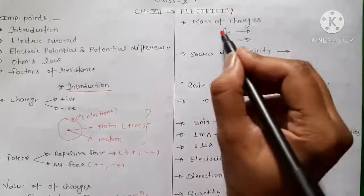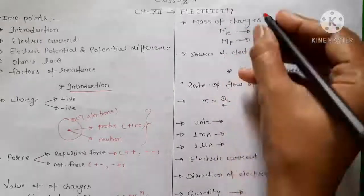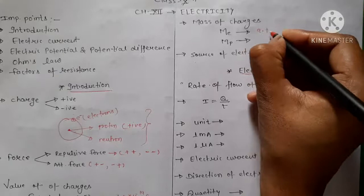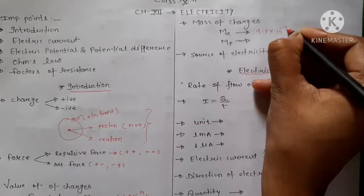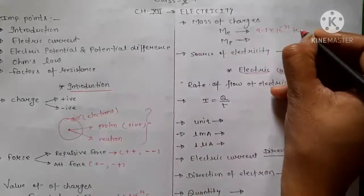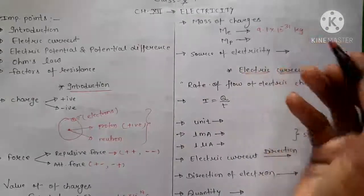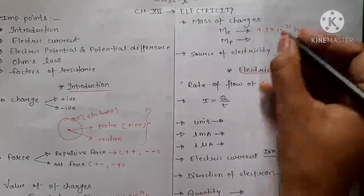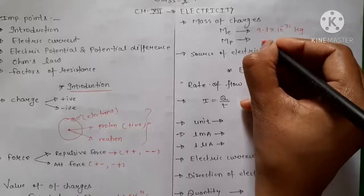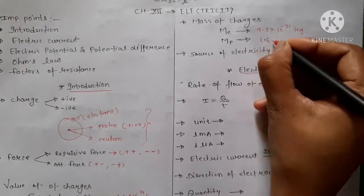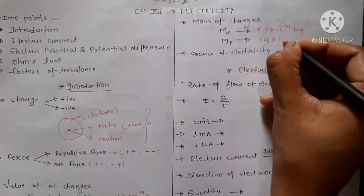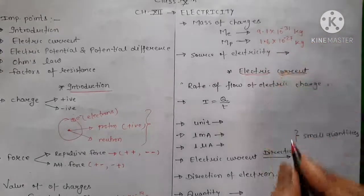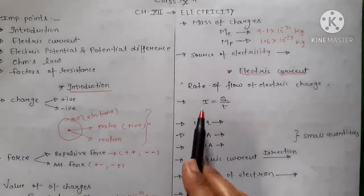Now let's talk about mass of charges. For electron, the mass is 9.1 × 10⁻³¹ kg. And for proton, the value of mass is 1.6 × 10⁻²⁷ kg. Kilogram is the unit here, just as you learned about coulomb earlier. These are general things you should know. Now the source of electricity is electric charge.